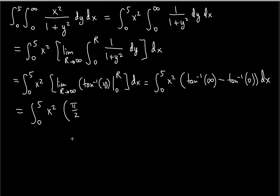The interval for the inverse tangent function is from negative pi over two to pi over two, so pi over two is the upper limit of that range. We know that tangent of pi over two is precisely infinity, so arctan of infinity equals pi over two. Now arctan of zero means the angle whose tangent is zero — since tangent of zero is zero, arctan of zero is zero.